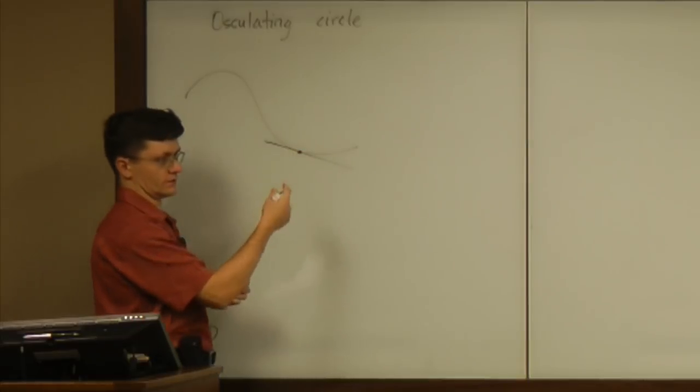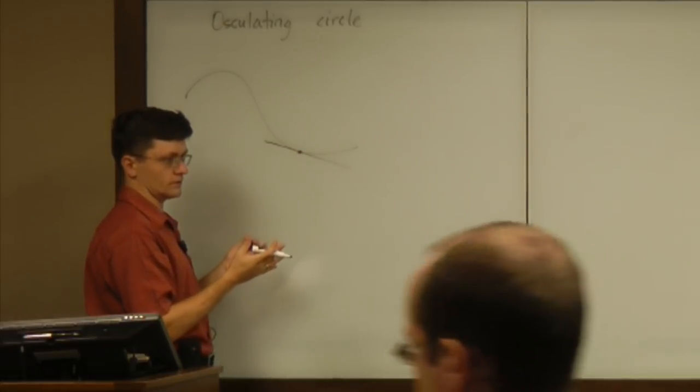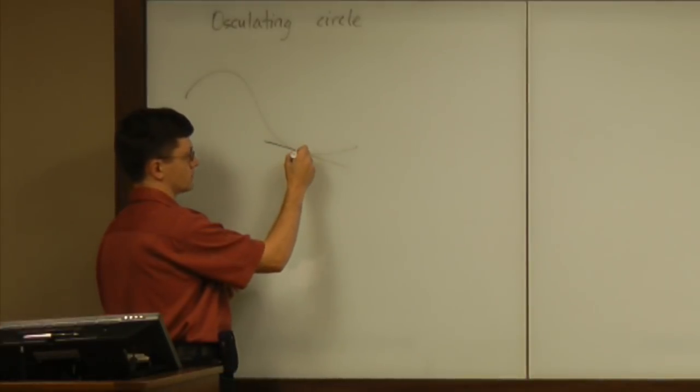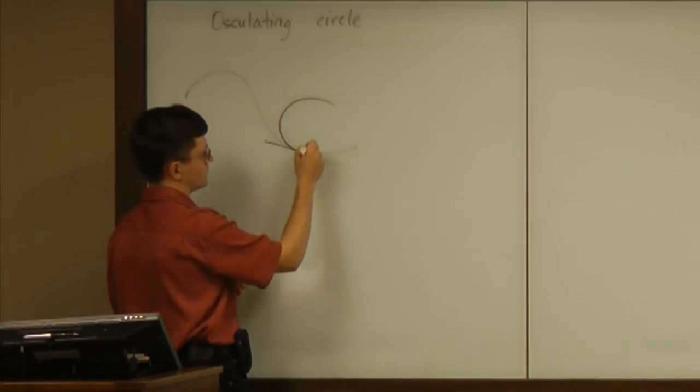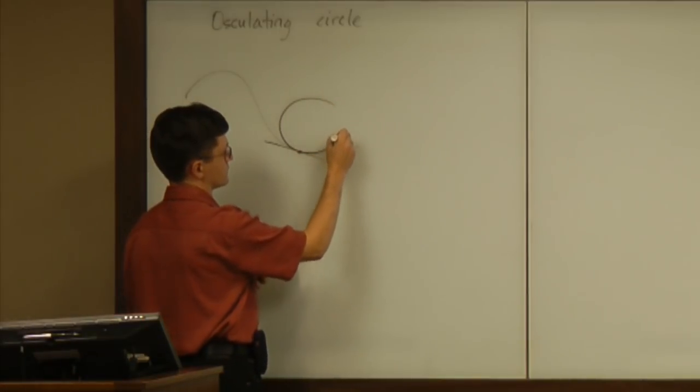Now, the next, geometrically, the next degree of approximation is going to be by circles, and you may think about the best circle approximating the curve, and that circle is called the osculating circle.